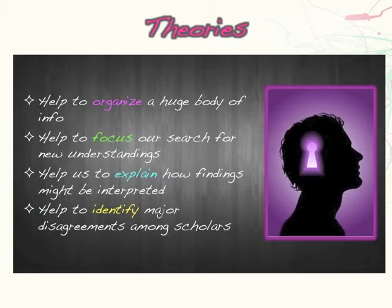So why do we look at theories instead of just straight-up scientific facts? The reason is because theories help us to organize a huge body of information. Think of it as writing down a list of different ideas and facts — theories allow us to take all of those and put them together into one comprehensive story. This helps us to focus our search for new understandings of development and human behavior.